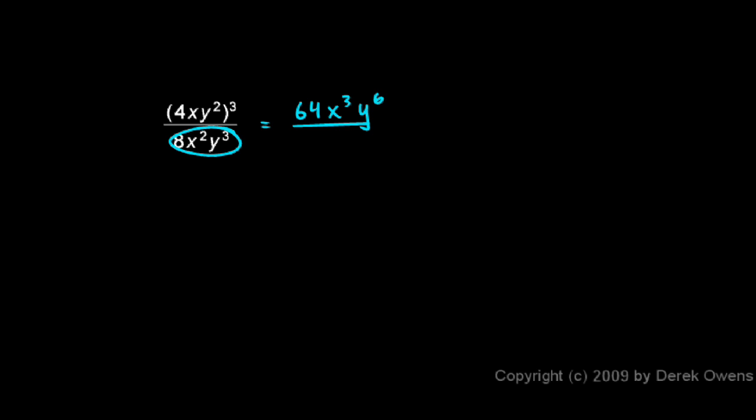And I still have this denominator, 8x squared y to the power of 3. And now I can simplify it one step further. The 64 divided by the 8 is just the same as an 8.